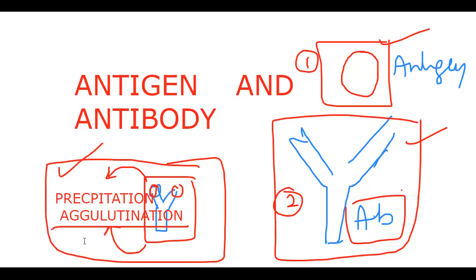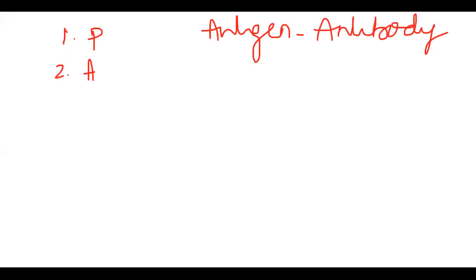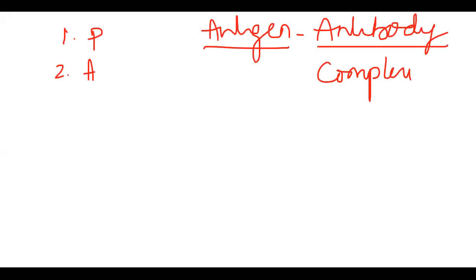For agglutination, we have a simple test — blood group testing. When blood group clotting occurs, we recognize the presence of A or B antigen. So antigen-antibody complex is seen either as precipitation or agglutination. Now we are going to the third case: in some formats, the antigen-antibody complex is not visible at all.